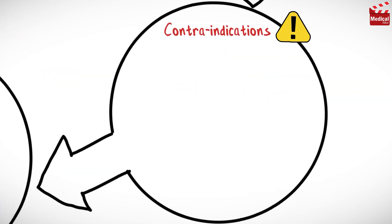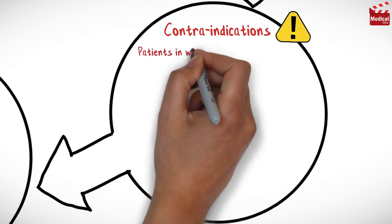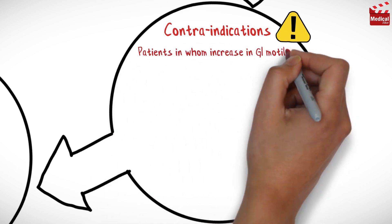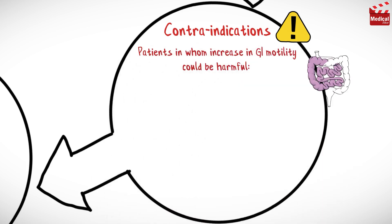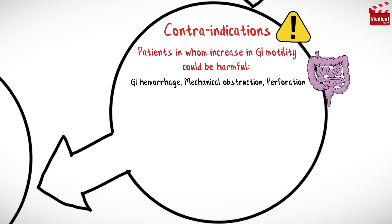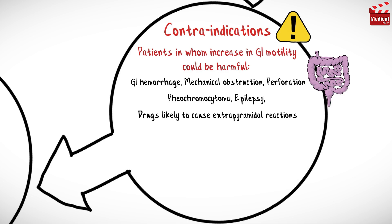Metoclopramide is contraindicated in patients in whom an increase in gastrointestinal motility could be harmful, such as in the presence of gastrointestinal hemorrhage, mechanical obstruction, or perforation. It is also contraindicated in cases of pheochromocytoma, epilepsy, and in patients receiving drugs likely to cause extrapyramidal reactions.